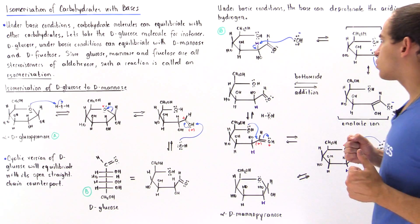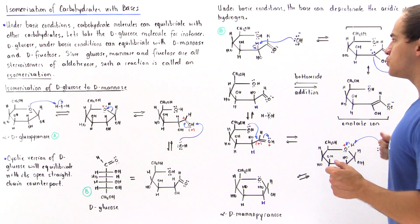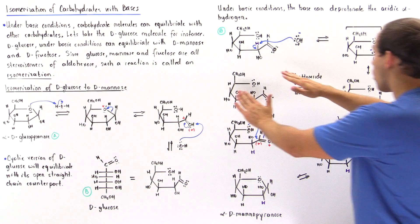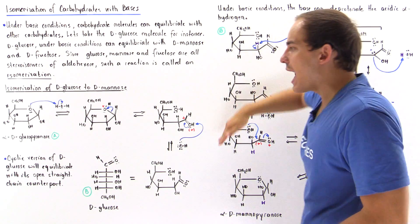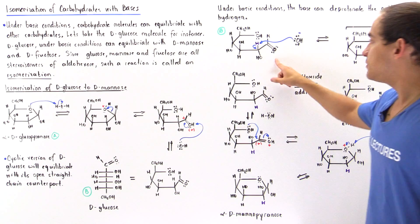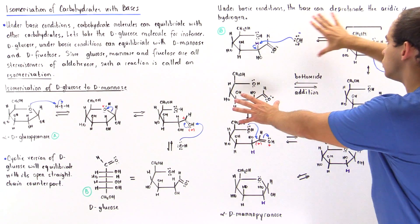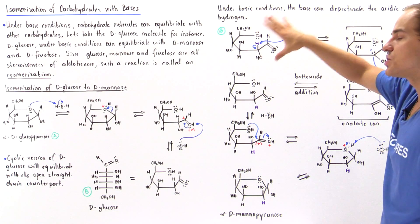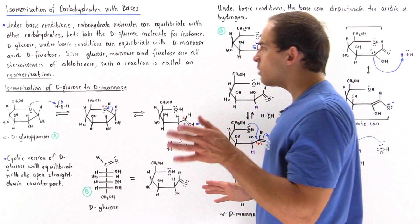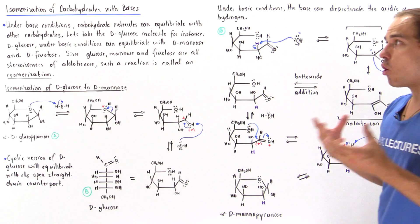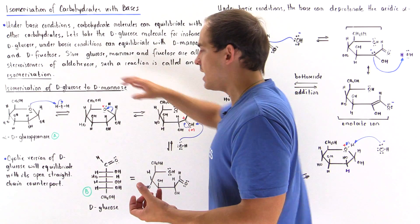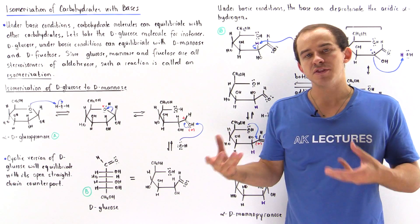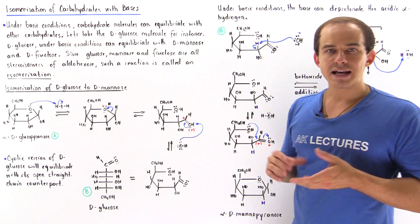Notice that we can easily interconvert between alpha-D-glucopyranose and alpha-D-mannopyranose as long as a base is present. The base deprotonates the alpha-H, and the enolate can then be reprotonated to produce either open straight-chain D-mannose or open straight-chain D-glucose, so an equilibrium exists between D-glucose and D-mannose. In the next lecture, we'll discuss how D-glucose also undergoes an isomerization reaction to form D-fructose, with an equilibrium existing between those isomers as well.